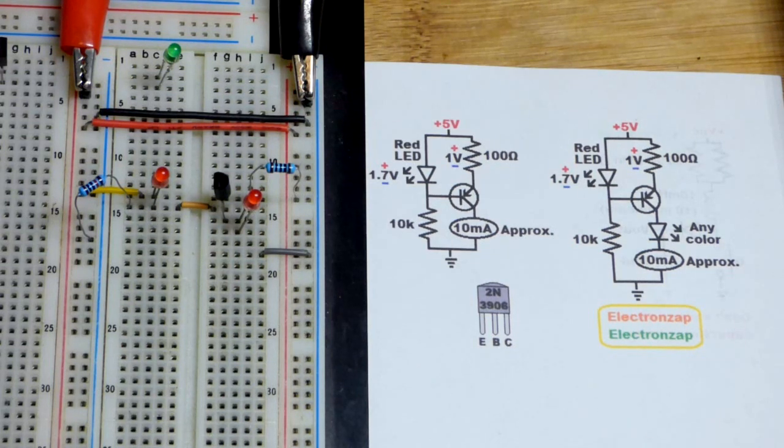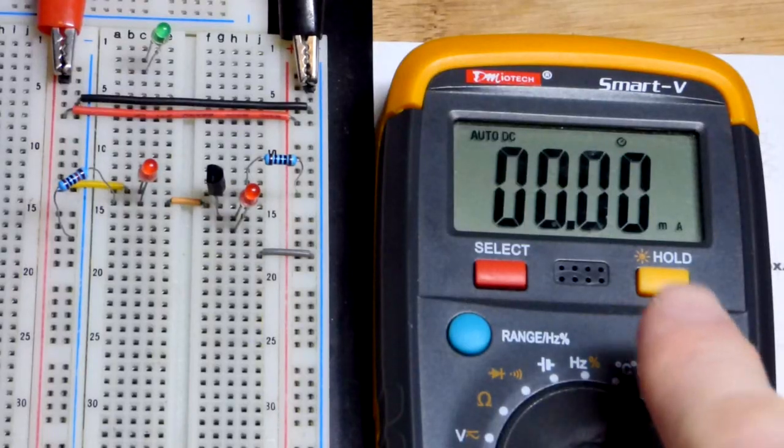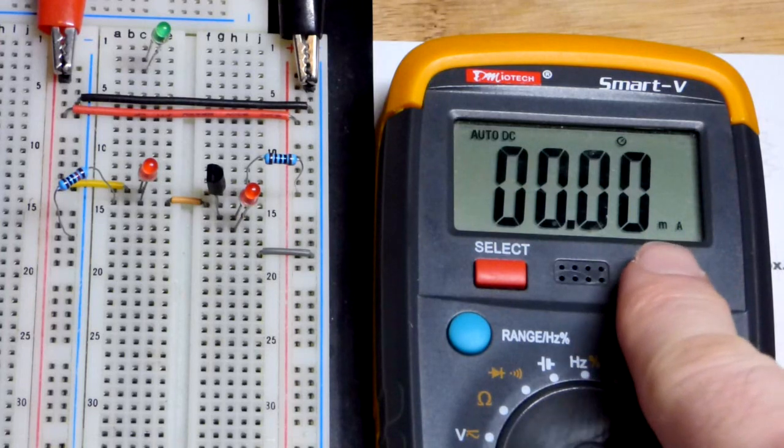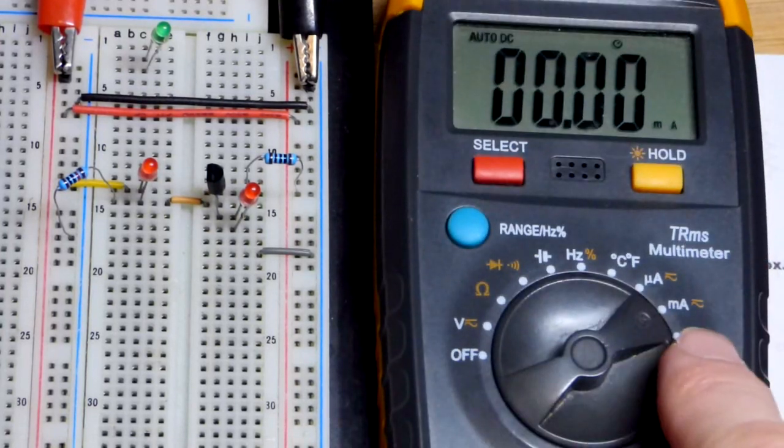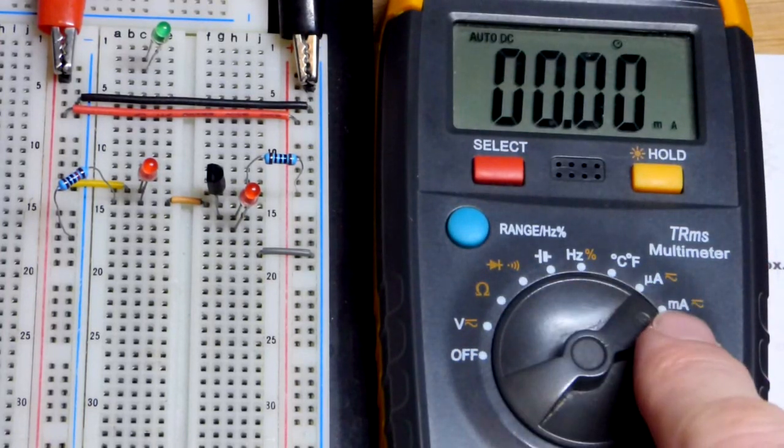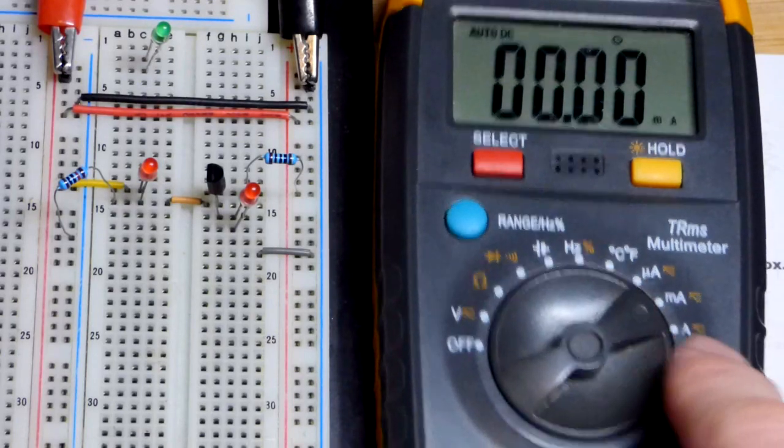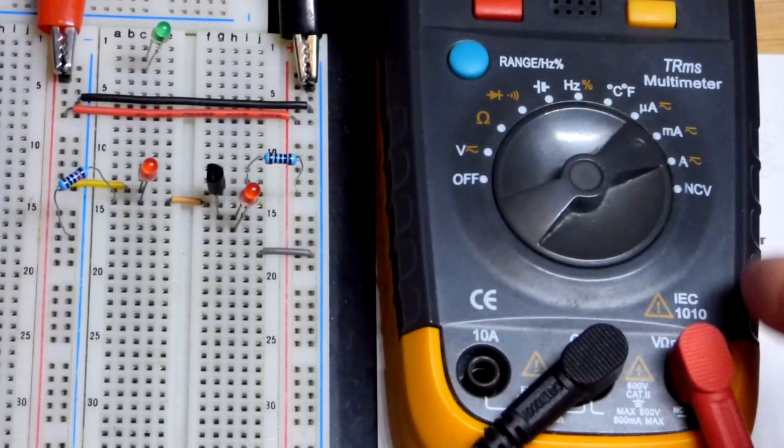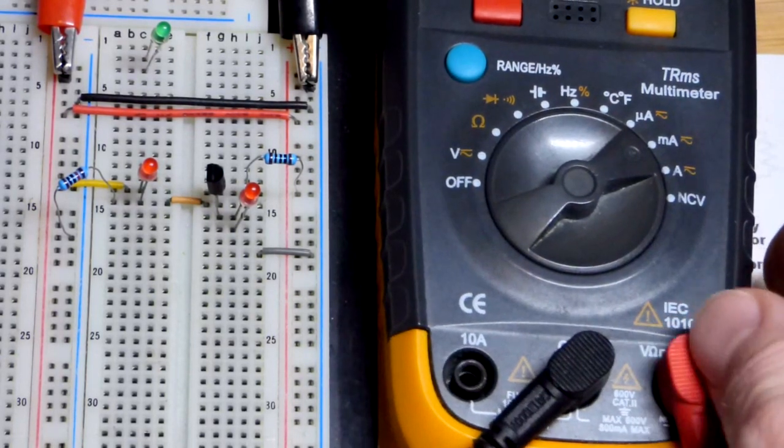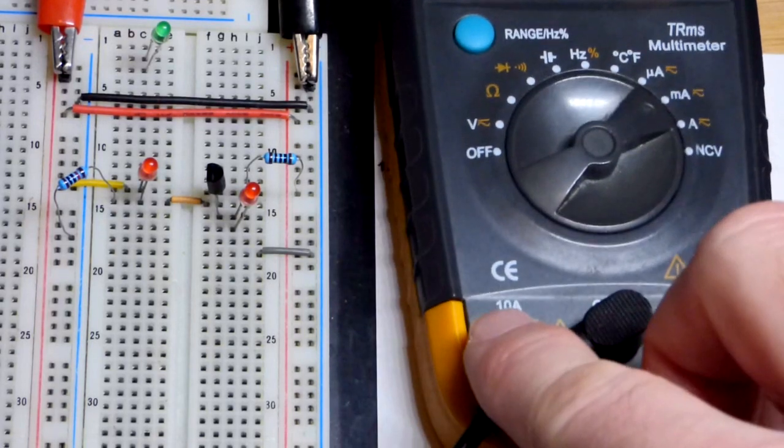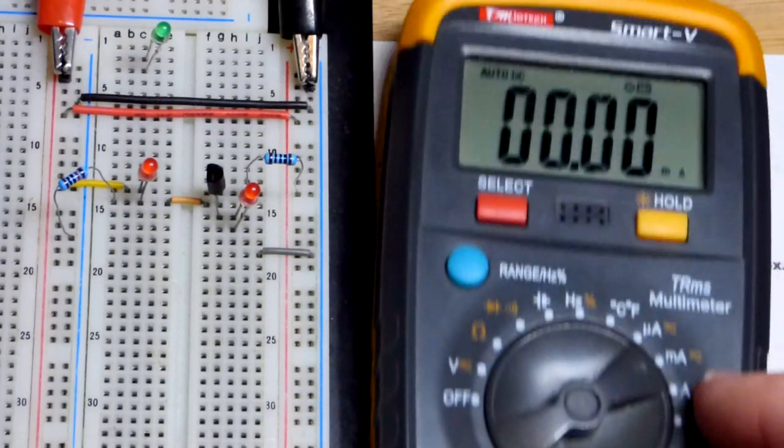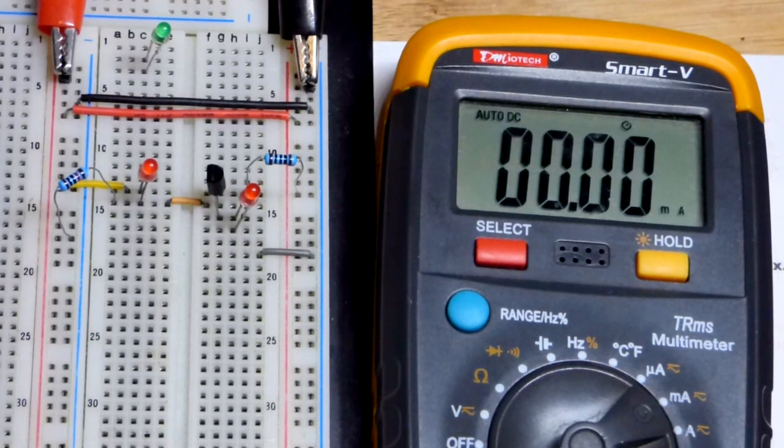I have the multimeter set to measure milliamps of current. If it has numbers, you set it to a number higher than you expect to measure. Since it is milliamps, we leave the red probe in that spot. For this meter we only have to change it if we measure high current in the amp range.